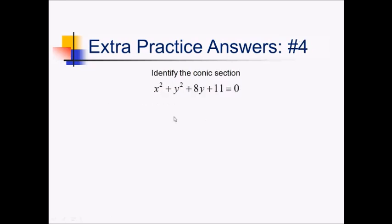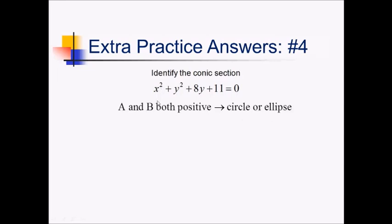For this problem, I notice that I've got two squared terms, so it's not a parabola, and A and B have the same sign — they're both positive. So this is either a circle or an ellipse. And I notice that the coefficients of x squared and y squared, A and B, are the same number — they're both invisible ones. That means this must be a circle.